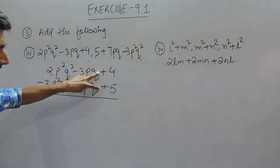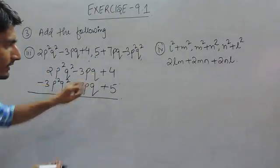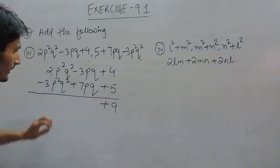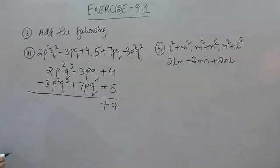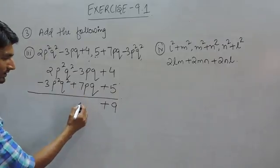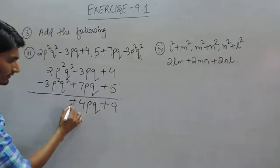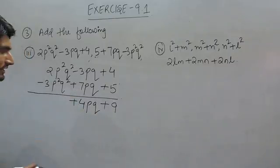This is positive positive, so this can be added. So 5 plus 4 is 9. This is positive negative, so this is negative. So 7 minus 3 is 4p cube, and positive because greater value has positive sign.